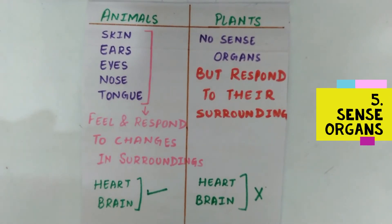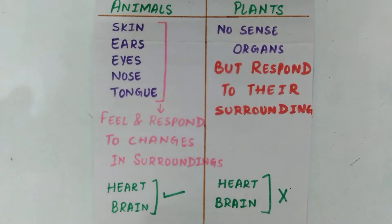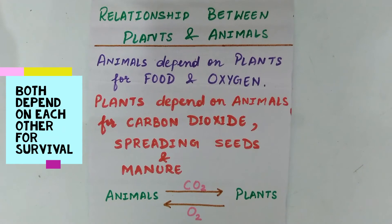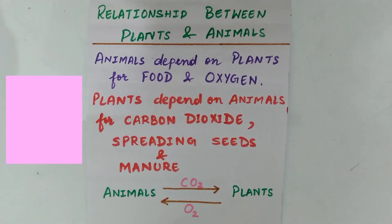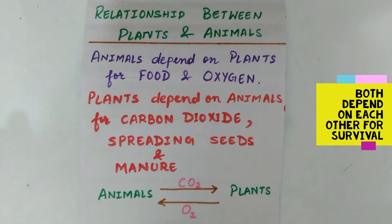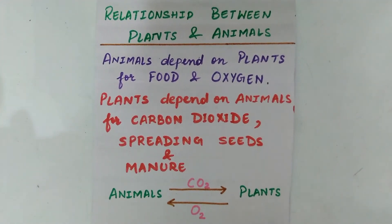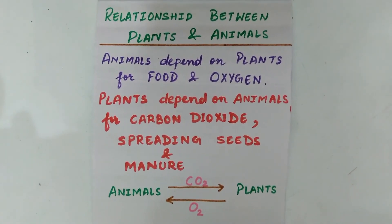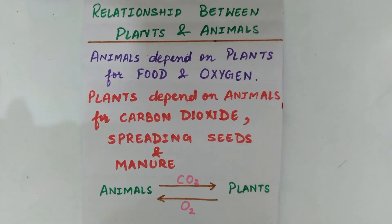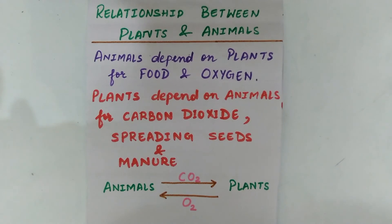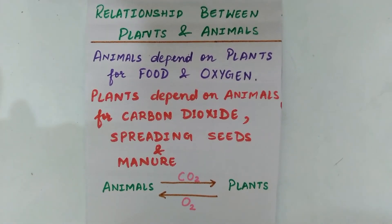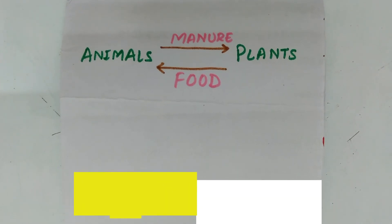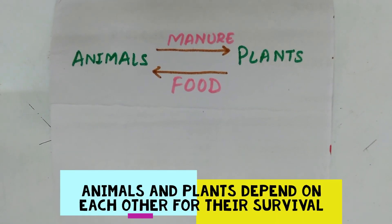Plants have no sense organs, but they do respond to their surroundings. Plants do not have a heart and brain. Animals depend on plants for food and oxygen. Plants depend on animals for carbon dioxide, spreading seeds, and manure. Animals give CO2 to plants, and plants give O2 to animals. Animals give manure to plants, and plants give food to animals.